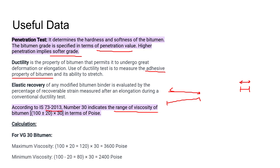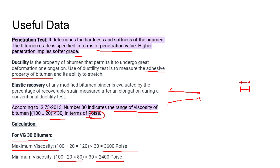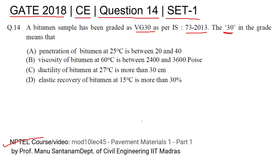According to IS 73:2013, the number 30 in VG-30 indicates the range of viscosity of the bitumen, that is 100 ± 20 multiplied by 30, expressed in poise. For VG-30 bitumen, the maximum viscosity will be (100 + 20) × 30 = 3600 poise, and the minimum viscosity will be (100 - 20) × 30 = 2400 poise.